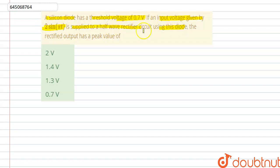Option A is 2 volt, option B is 1.4 volt, option C is 1.3 volt, and option D is 0.7 volt.